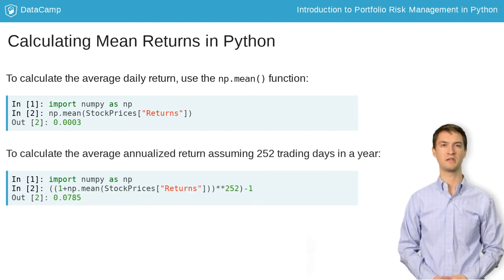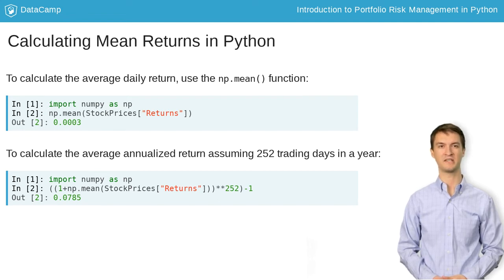Now, if you want to annualize that number, you'll first need to add 1 to the decimal before raising the quantity to the power of 252, which is the typical number of trading days in a year.